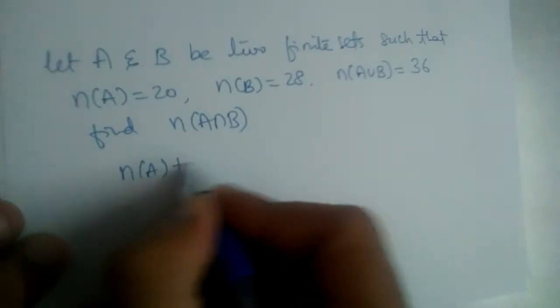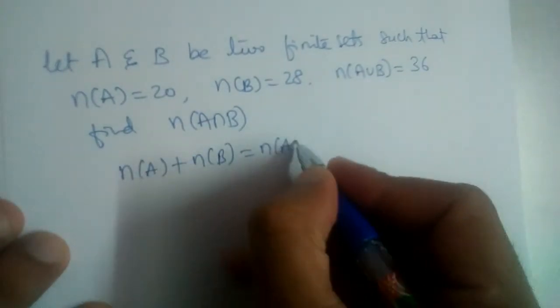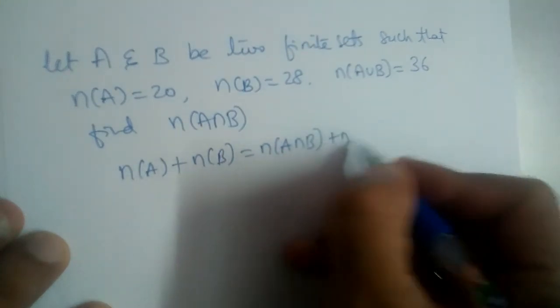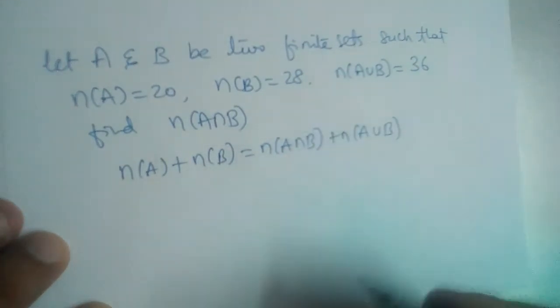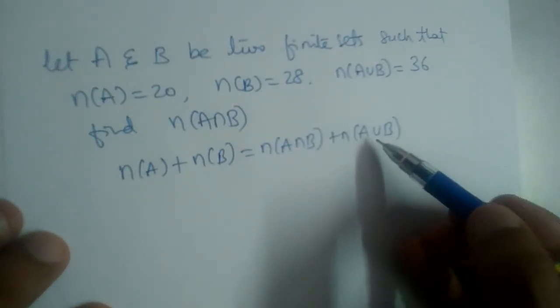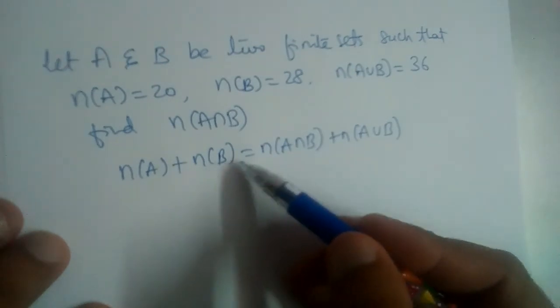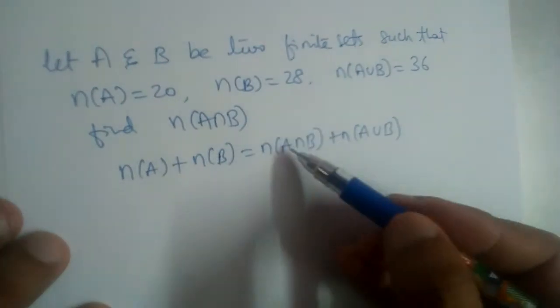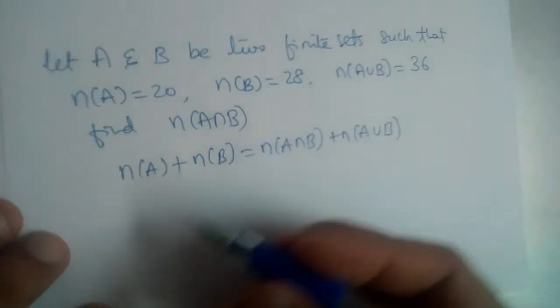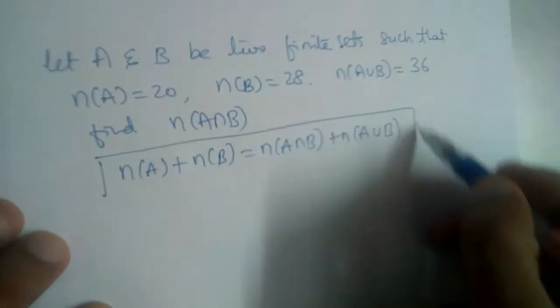that n(A) plus n(B) is equal to n(A intersection B) plus n(A union B). So we can write n(A union B) here also with minus sign on the left-hand side, or you can write n(A intersection B) on the left-hand side with minus sign. This is the formula.